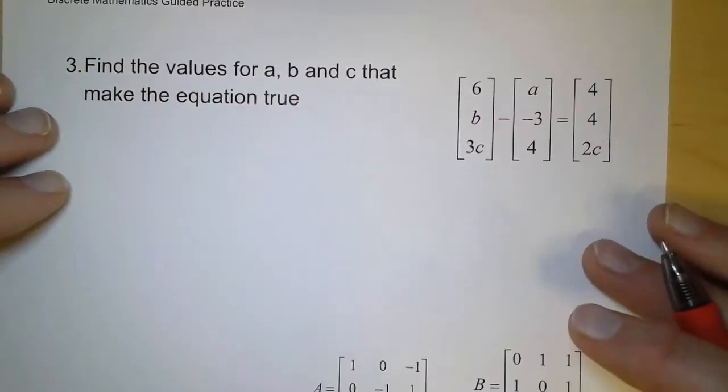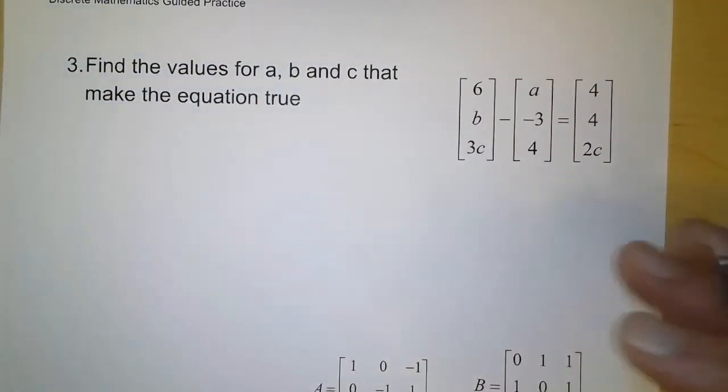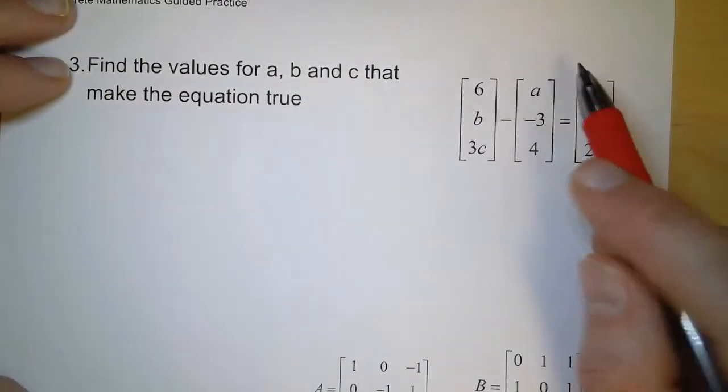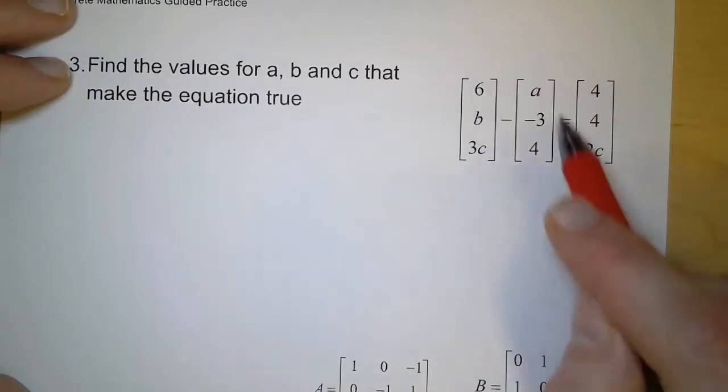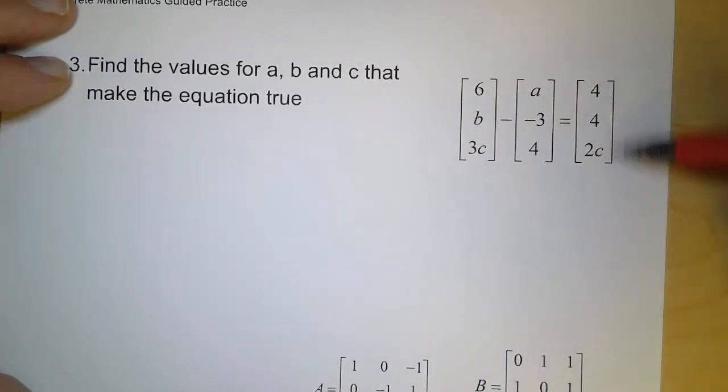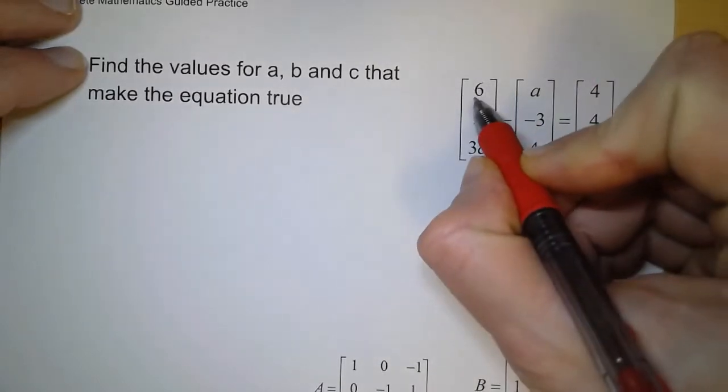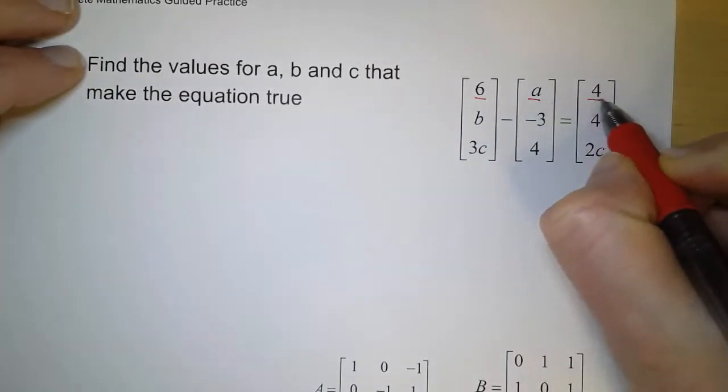So looking at number 3, here we introduce a few variables. This matrix is being subtracted from this, and then we're getting this answer over here. So we want to find the values for a, b, and c. Let's look at the top number. Here we have 6 minus a equals 4.